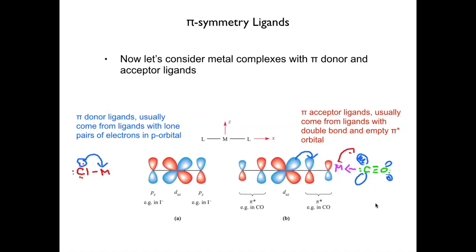This pi star orbital can accept electrons from a d-type orbital on our metal. The way we recognize when a ligand will be able to pi accept is the presence of a multiple bond — double or triple — adjacent to the atom bound to the metal, because that creates a pi star orbital in our ligand.